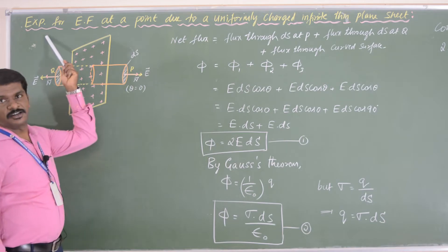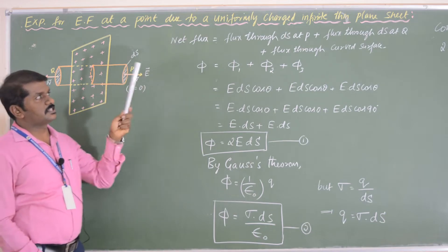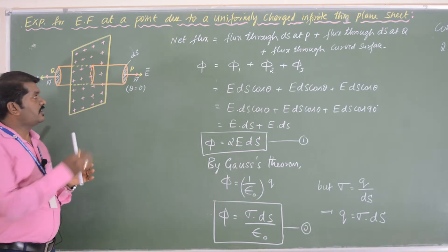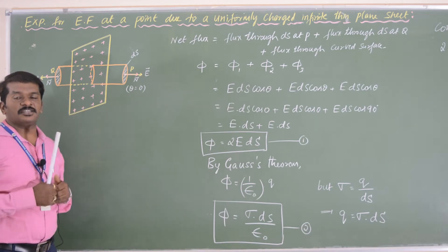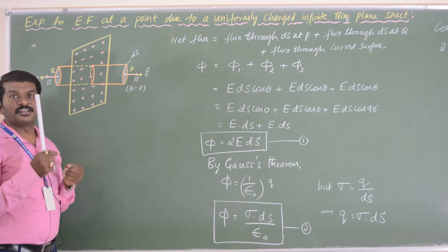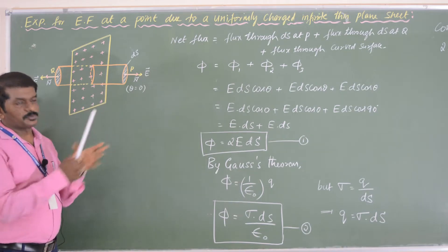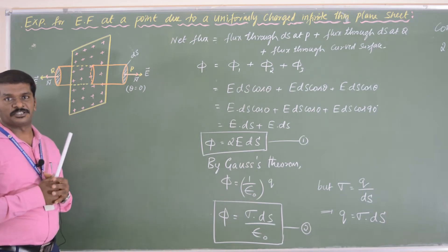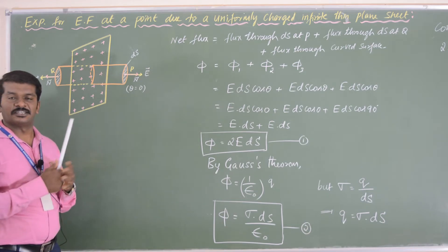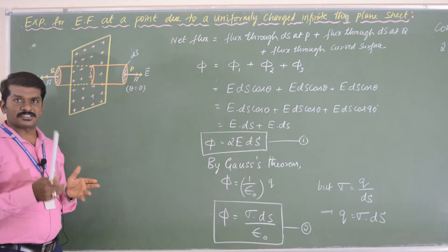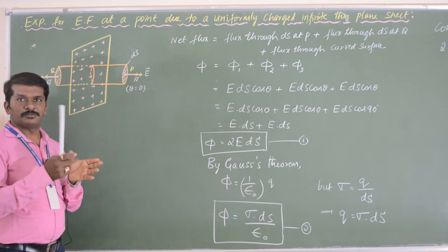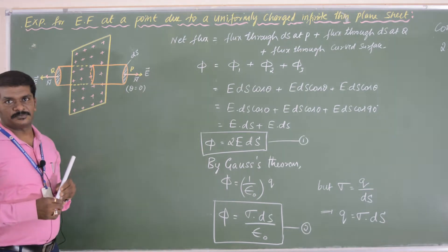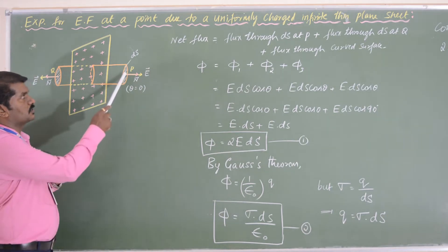This is the second application of Gauss theorem: the expression for electric field at a point due to a uniformly charged infinite thin plane sheet. Consider an infinite thin plane sheet given a charge. Our intention is to find the electric field intensity at a point near the surface. We consider two points P and Q on either side of the thin plane sheet, very close to it, and assume a cylindrical Gaussian surface such that the flat cross-sections pass through P and Q.